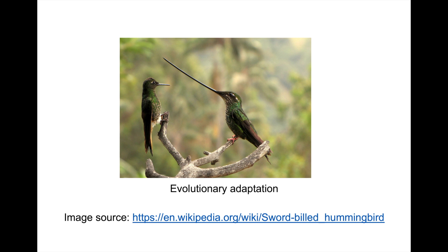All living organisms undergo evolutionary adaptation. This is a case of hummingbirds in the Amazon jungle. These two different types of hummingbirds have adapted to eating food in different parts of the jungle. The hummingbird with the long beak uses its long beak to have exclusive access to plants and flowers that have a long tube, whereas the other hummingbird does not have this privilege. This long beak is an evolutionary adaptation providing a survival and reproduction advantage.